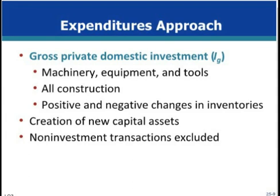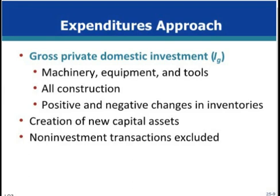Construction also includes residential construction, because homes could be rented to produce income. When gross investment exceeds depreciation during a year, net investment occurs. This net investment expands the stock of private capital from the beginning of the year to the end of the year, allowing the economy's production capacity to expand, all other things equal.